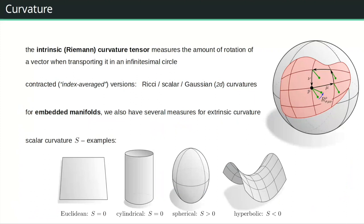Looking back at the smooth examples: on Euclidean space, parallel transporting a vector around a loop returns it unchanged. The same holds on a cylinder, confirming it is intrinsically flat. A sphere is positively curved — to flatten it you would need to close a gap of 2π/6. A hyperbolic space is negatively curved — to flatten it you would need to spread it open, meaning going around a point in hyperbolic space gives more than 2π total angle. Flat space gives exactly 2π, positively curved spaces give less, and hyperbolic spaces give more.